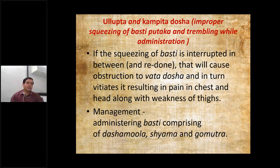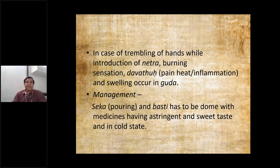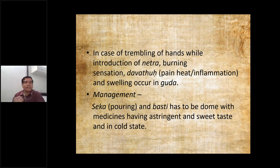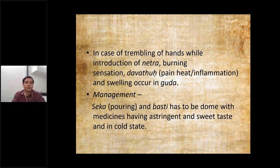For the Ullupta dosha management, administering Basti comprising Dasha Moola — that is the Vata-Hara decoction — with Shama and Gomutra is prescribed. In case of trembling of hands while introduction of the Netra, burning sensation, Dabhatu — a particular pain with inflammation, a feeling of being hit with pain — and swelling occur. The management is Seika, that is pouring of particular warm decoctions, and Basti has to be done with medicines having astringent and sweet taste in a cold state. Since Dabhatu is there, the fomentation is not directly expected, and the Dravya should be a cold one.